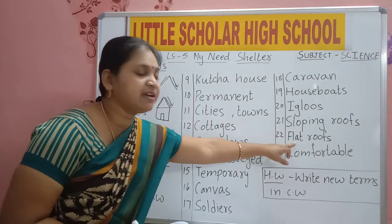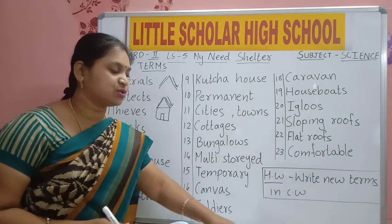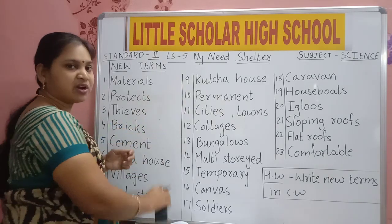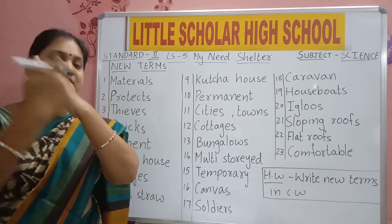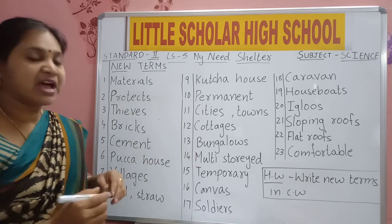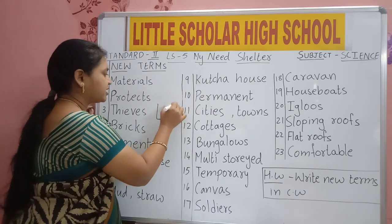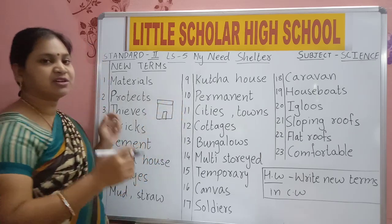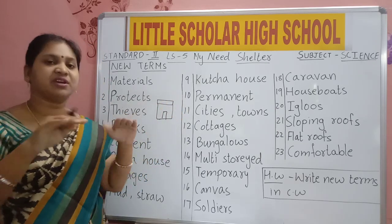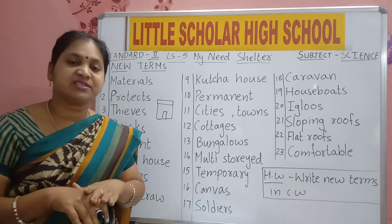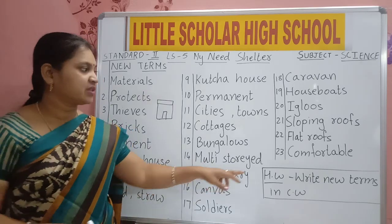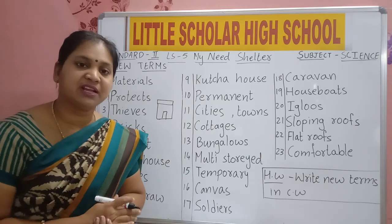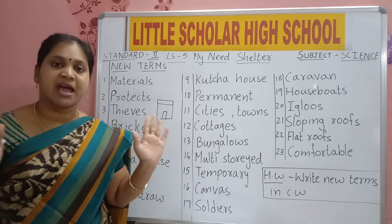Next term: Flat Roofs — F-L-A-T R-O-O-F-S. Flat roof means the roof is flat and straight. All our roofs are like this — flat. Last term for today: Comfortable — C-O-M-F-O-R-T-A-B-L-E. Comfortable means relaxed and happy. At home, how do you feel? Relaxed and comfortable. So all these are the new terms for today.